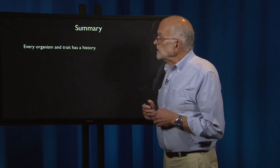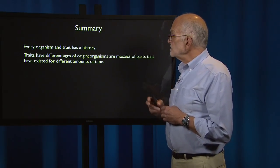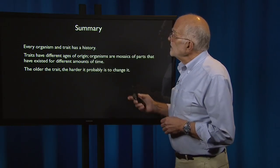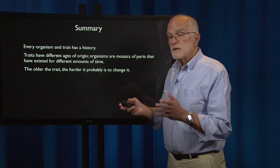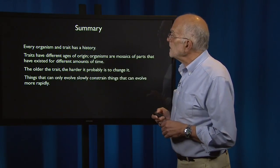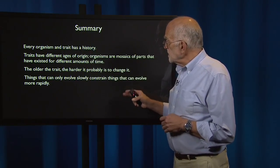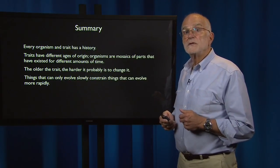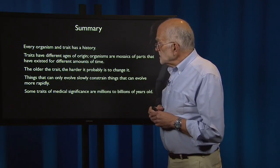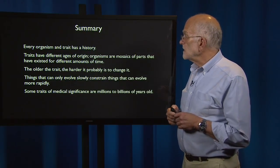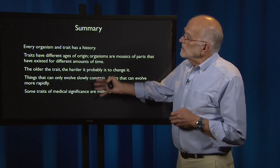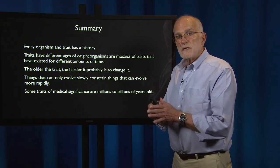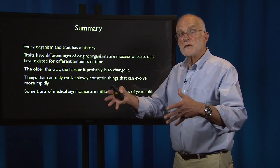To summarize: every organism and trait has a history, and traits have different ages of origin — organisms are mosaics of parts that have existed for different amounts of time. The older the trait, the harder it probably is to change it; that's a tendency, not an absolute. Things that can only evolve slowly constrain things that can evolve more rapidly — the old framework constrains the further evolution of more recent parts. Some traits of medical significance are millions or billions of years old, and every part of the organism and its history is interacting with many of the other parts.